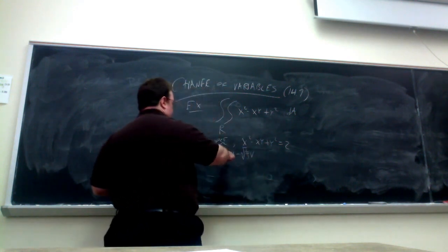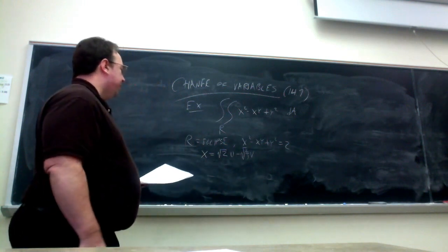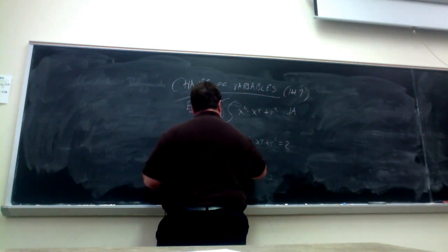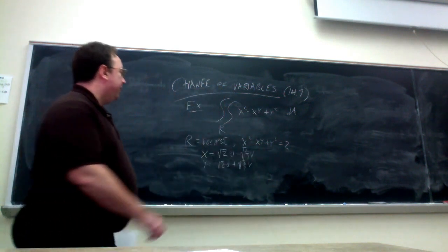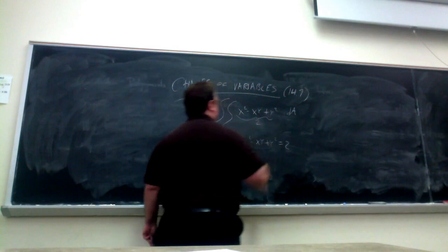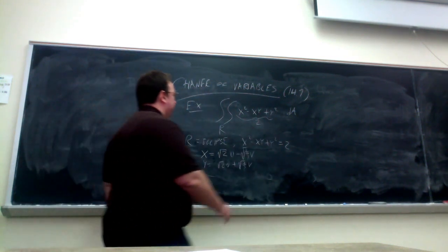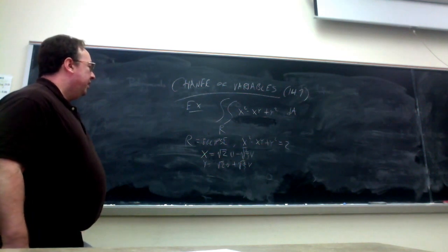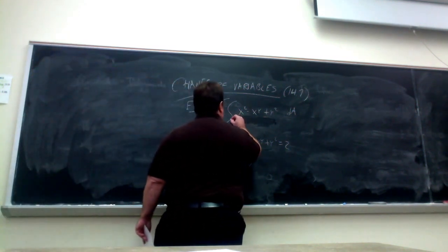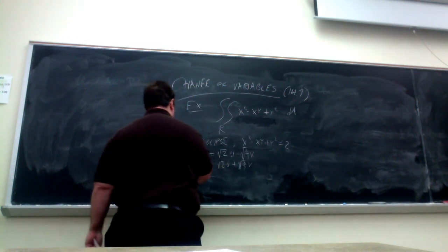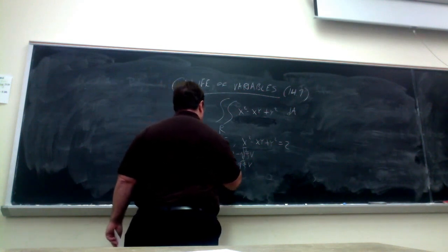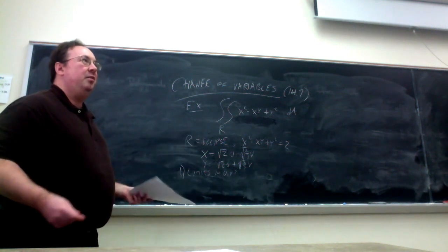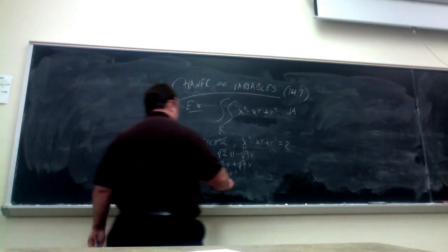I want to emphasize that u and v are not under the square root. We have y = √2·u + √(2/3)·v. The integrand x² − xy + y² equals 2 only on the boundary — it'll equal something else in the interior. We need to know what the limits will be in u and v. We don't need limits in x and y; we only need the limits on the integral we're actually going to evaluate.